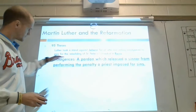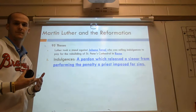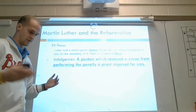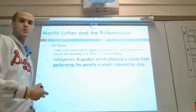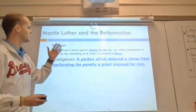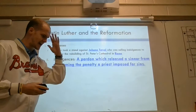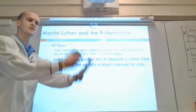Indulgences — which is one of your vocabulary words — is a pardon which releases a sinner from the penalty for his sins. It releases a sinner from the penalty that a priest may impose on that person. So it essentially allowed people to buy forgiveness. They would give money to the church and the church would say, 'You're forgiven.' People are literally paying for their sins. But people at this time don't know any better — they're not able to read for themselves and the church is telling them, and they're taking the church at its word.